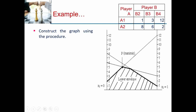To construct the graph, first draw two vertical lines: X1=0 (left) and X1=1 (right). The first strategy A1 is on the right side and A2 on the left. The lowest value in the matrix is 1 and the highest is 12, so we equally divide both lines into 12 equal parts from 1 to 12. For strategy B2, mark point 1 on the right-hand side and point 8 on the left-hand side, then join them to get the B2 strategy line.